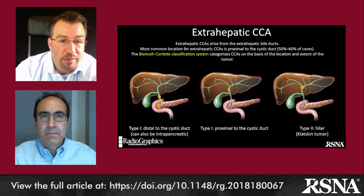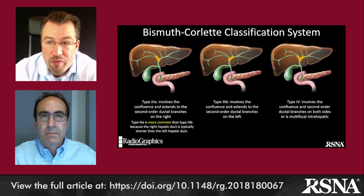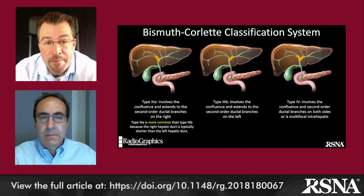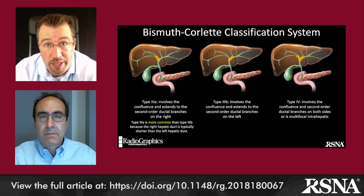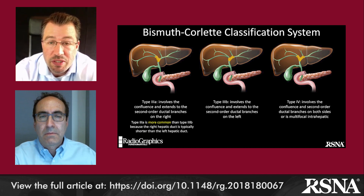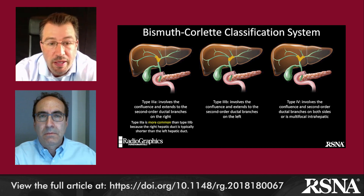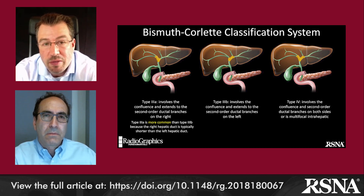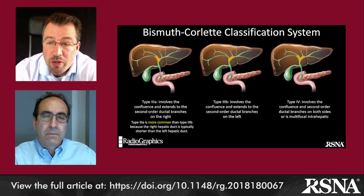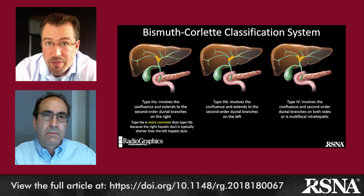On the next slide you see the variations of the 3a, 3b, and Type 4 cholangiocarcinomas. The 3a involves the hilum but also extends to involve the second-order branches on the right, and 3b extends to involve the secondary-order branches on the left. The 3a tends to be more common only because the right hepatic duct tends to be shorter than the left. If the tumor goes on to involve the second-order radicals on both left and right, that's considered a Bismuth Type 4, which is generally considered unresectable.